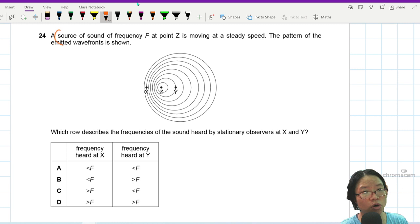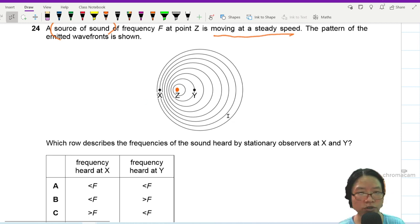So the source is here at z, moving at a steady speed. The pattern of the emitted wave front is shown. Which row describes the frequencies of the sound heard by the stationary observers x and y?